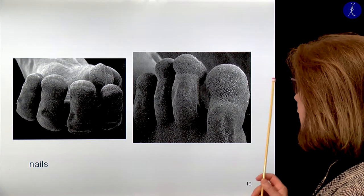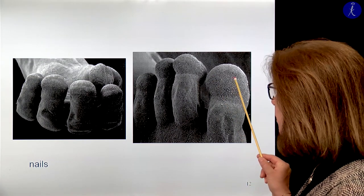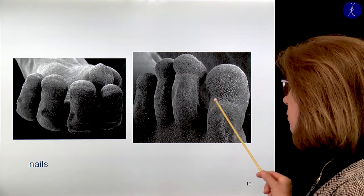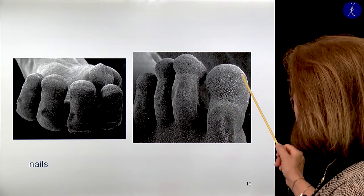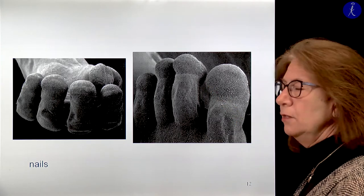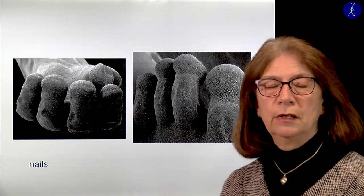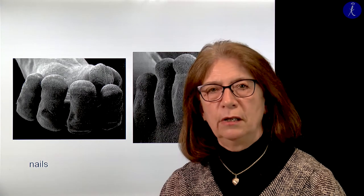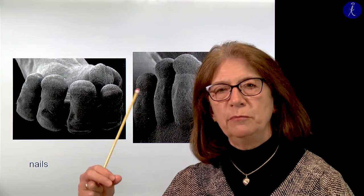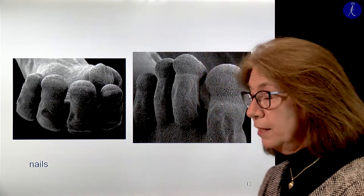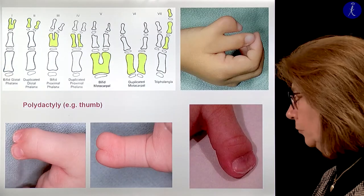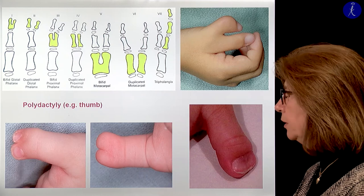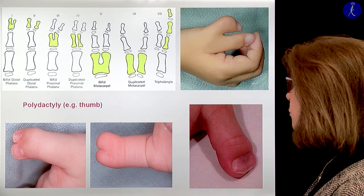On the dorsal surface of the fingers you have the rudimentary nail territories. Nails are very important for sensory function — they give a stable background; if you touch something you feel it better if on the other side you have a healthy nail. Of course, malformations may happen, like polydactyly. On the example of the thumb, the distal phalanx may be bifid or separated, the proximal phalanx may be bifid, and it's possible that even the thumb has an extra phalanx.